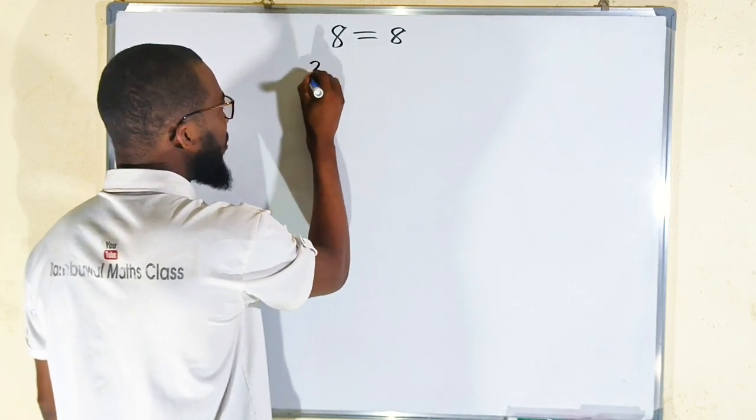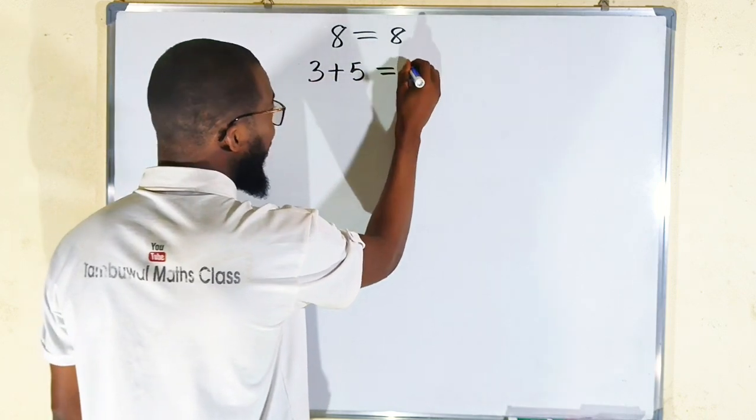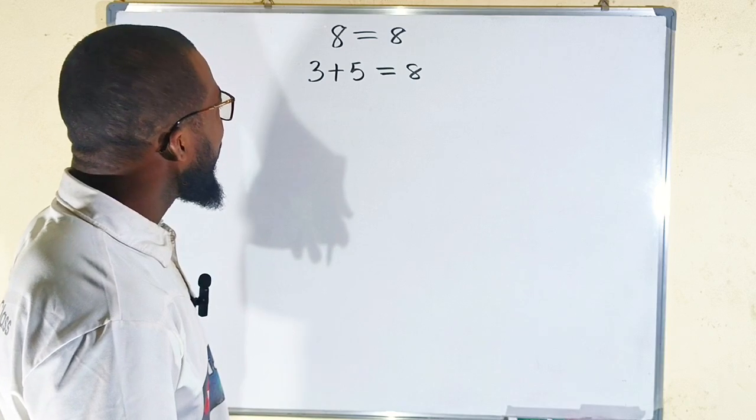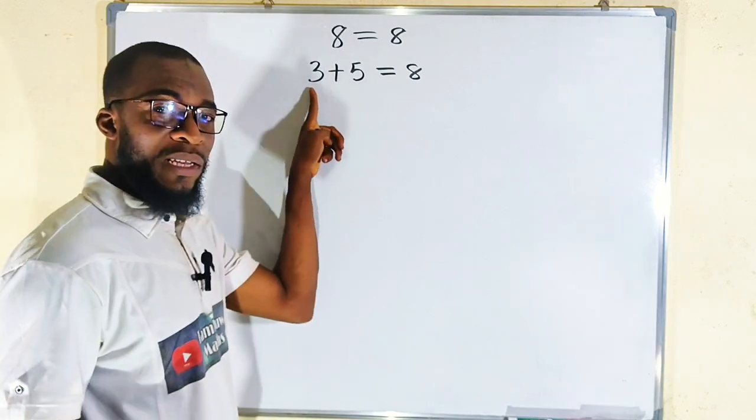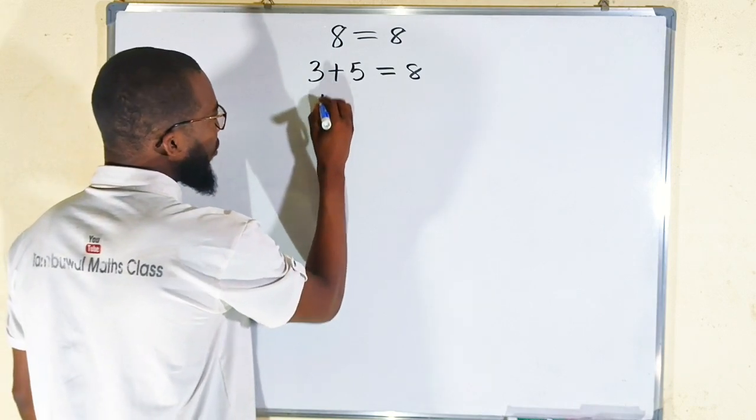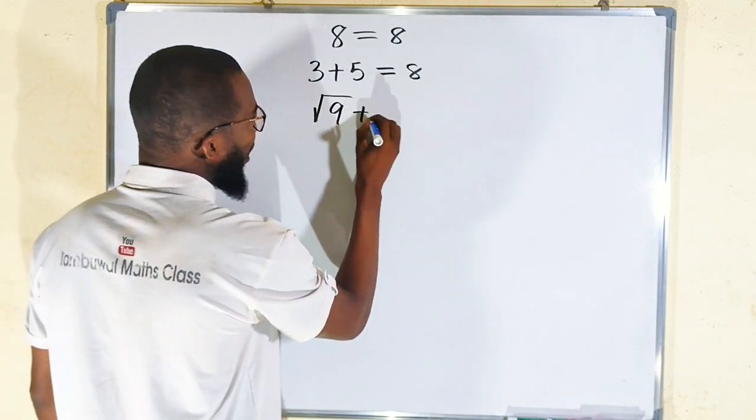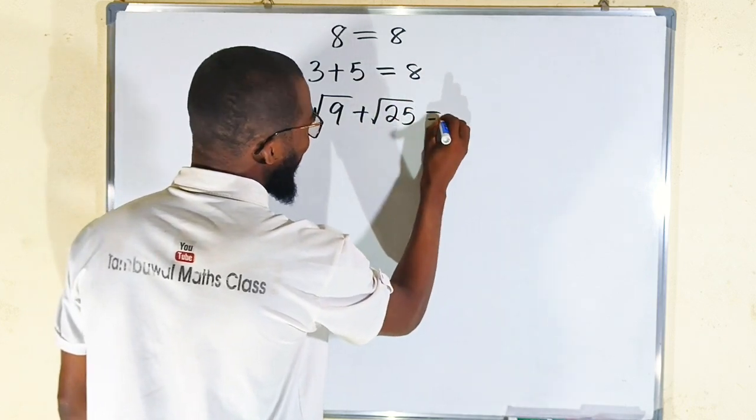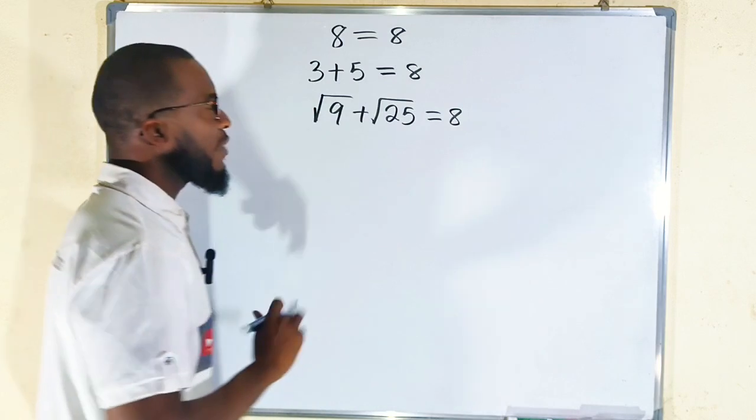3 + 5, this remains equal to 8, no doubt about it. And square root of 9 is the same thing as 3, so we can replace this with square root of 9. Then 5 is the same thing as square root of 25, and this remains equal to 8, no doubt about it.